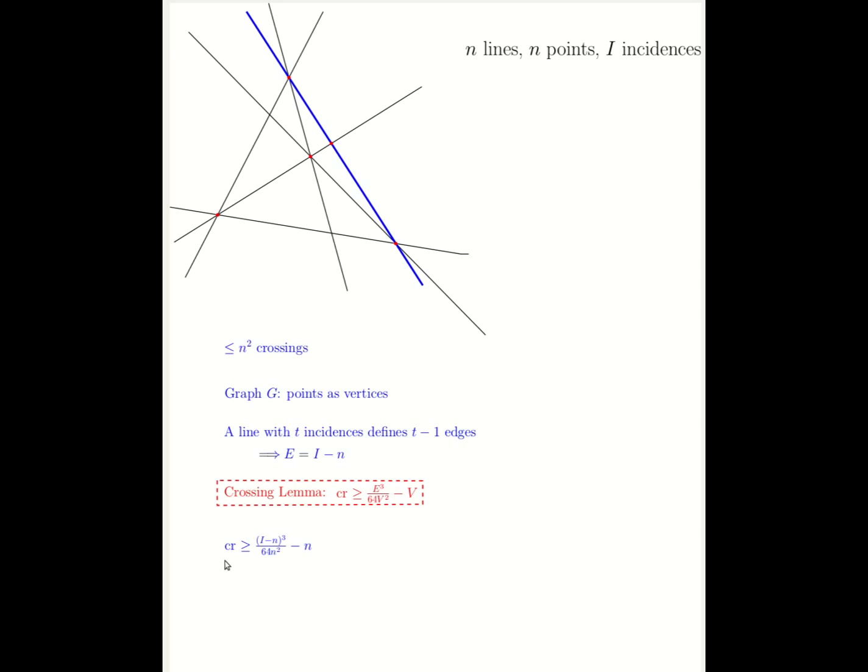If we plug in the values that we have, we know that the number of crossings is at least i minus n cubed divided by 64 times n squared minus n. However, we observe that in a graph created by n lines, there can be at most n squared crossings.